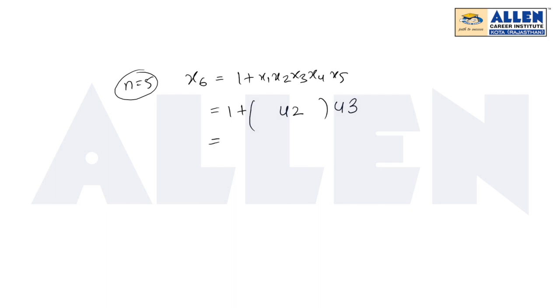Now 1807 equals 13 into 139. 1807 equals 13 into 139, where 139 is the largest prime factor of 1807. We have to find the digital sum of the largest prime factor of x6, which is equal to 1 plus 3 plus 9 equals 13.